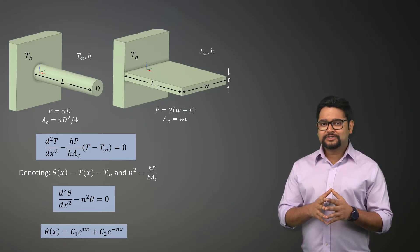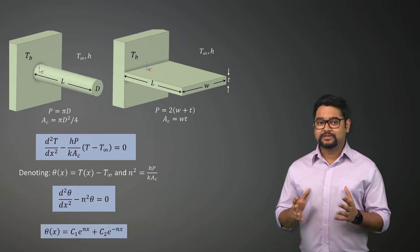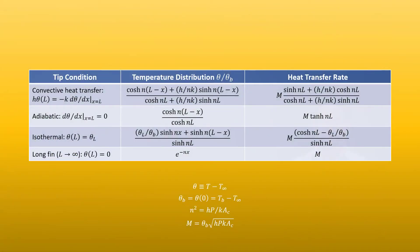The boundary conditions at the fin's tip can be prescribed in several ways, leading to different forms of solutions as shown in this table. The key takeaway here is that depending on the prescribed boundary condition at the tip, we get different temperature distributions and heat transfer rate from the fins.